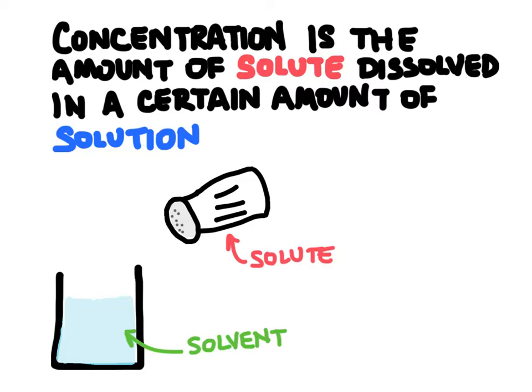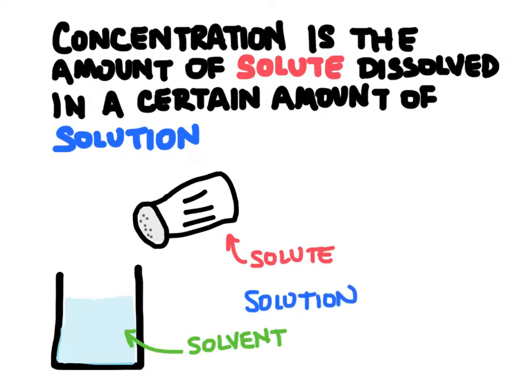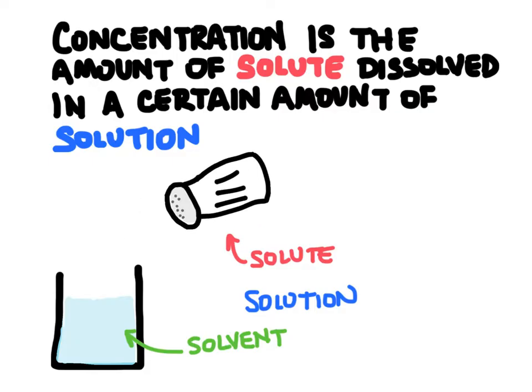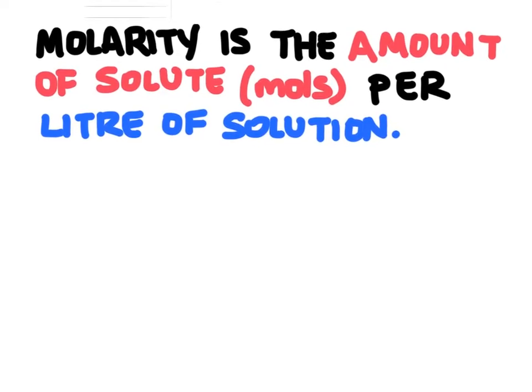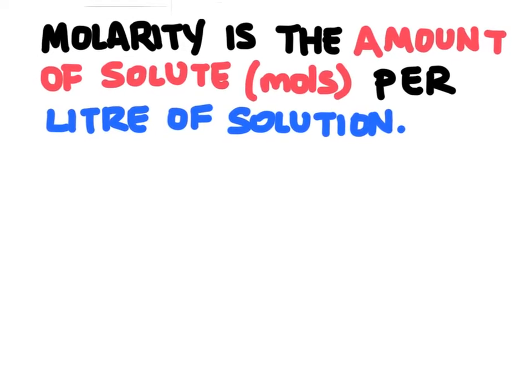Together they would be the solution, so the solution is the combination of a solute and a solvent. The more solute that we can fit into a solvent, the more concentrated the solution is going to be. Molarity is defined as the amount of solute measured in moles per liter of solution, and we use the letter M, capital M, to symbolize molarity.